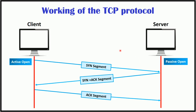In TCP, the connection is established with the help of the three-way handshaking protocol, where the client initiates the connection and sends a segment with a sequence number. The server acknowledges it back with its own sequence number and an acknowledgment of the client's segment, which is one more than the client's sequence number. The client, after receiving the acknowledgment, sends an acknowledgment of the server's response. For connection termination, the server or client can send a TCP segment with the FIN flag set to 1. When the response is acknowledged with a FIN, that direction of TCP communication is closed and the connection is released.